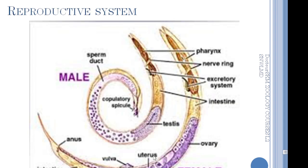For the reproductive system: this animal is not hermaphrodite — it is gonocoric, meaning each animal has only one reproductive system. The female contains one ovary and several uteruses. These uteruses are connected by oviducts and finish with a genital pore located at roughly the midpoint of the animal's body.